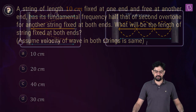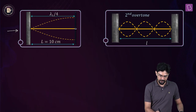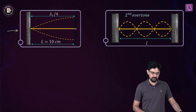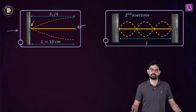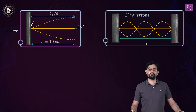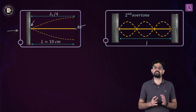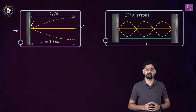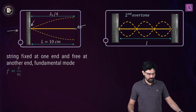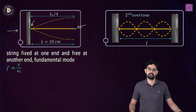Let's understand this with the help of diagrams. The first string has length of 10 cm (capital L), fixed at one end and free at the other. For its fundamental mode, the length equals λ/4, and its fundamental frequency is given by V/(4L).